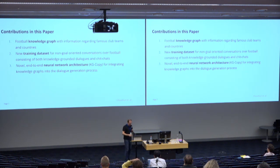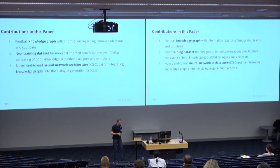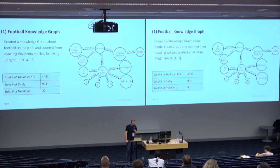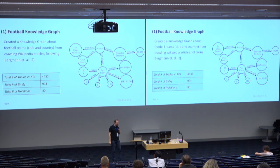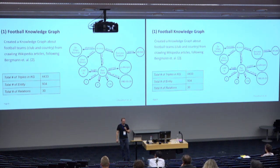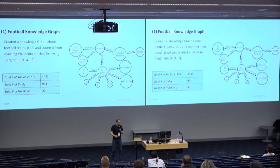The first contribution is straightforward: we created a new soccer knowledge graph based on Wikipedia information, drawing on existing previous work. We cover teams, players, and some of their characteristics. It is a relatively small knowledge graph with 4,400 triples and fewer than 1,000 entities, suitable for our purpose of creating a dialogue system for one particular domain.